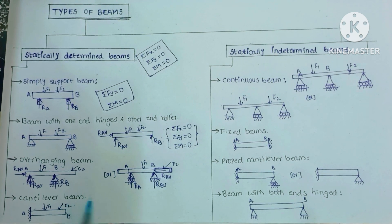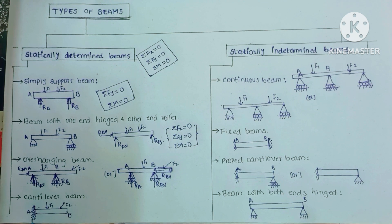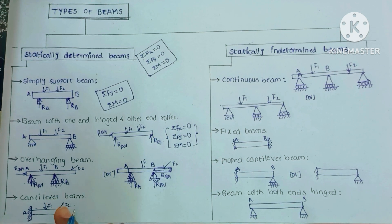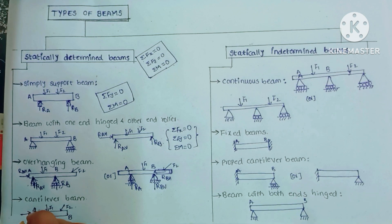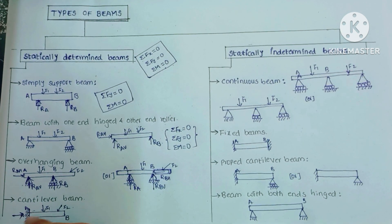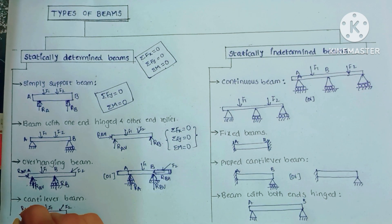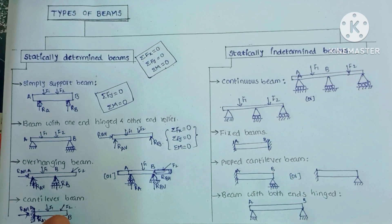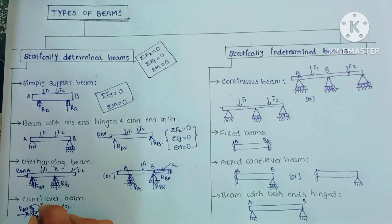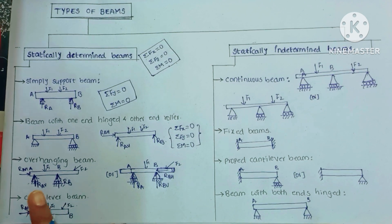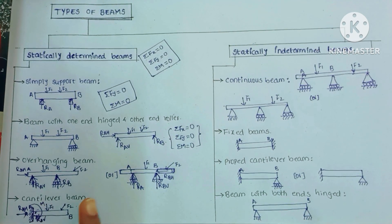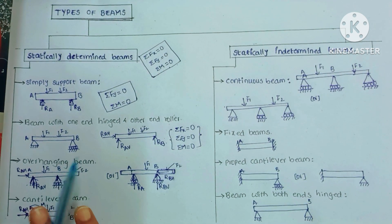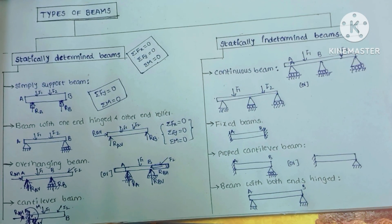The fourth type is cantilever beam. The beam has one end fixed and another end free — this is called a cantilever beam. The fixed support at point A has both a horizontal reaction force, a vertical reaction force, and a moment. So it has three unknowns, and with three static equilibrium conditions we can find the unknown forces on the cantilever beam. It also comes under statically determined beams.